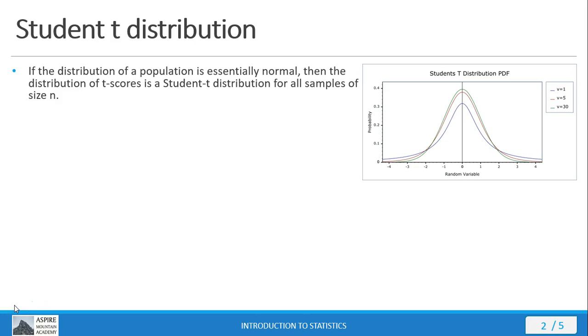So in the previous mini-lecture, we mentioned the student t-distribution. Here's what that is. If our distribution is essentially normal, then the distribution of t scores is going to be a student t-distribution for all samples of size n.